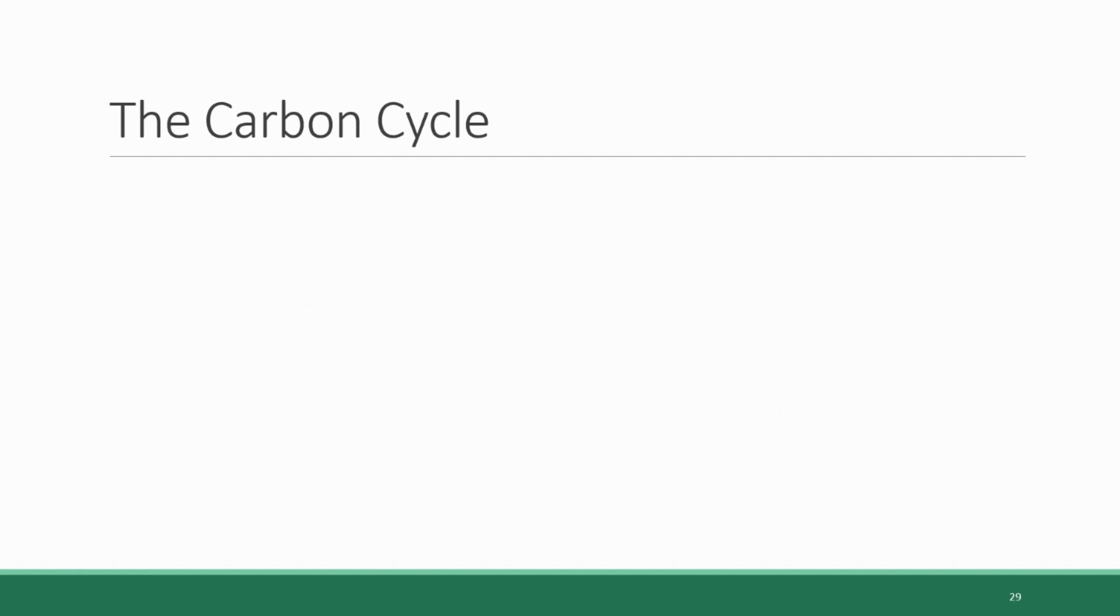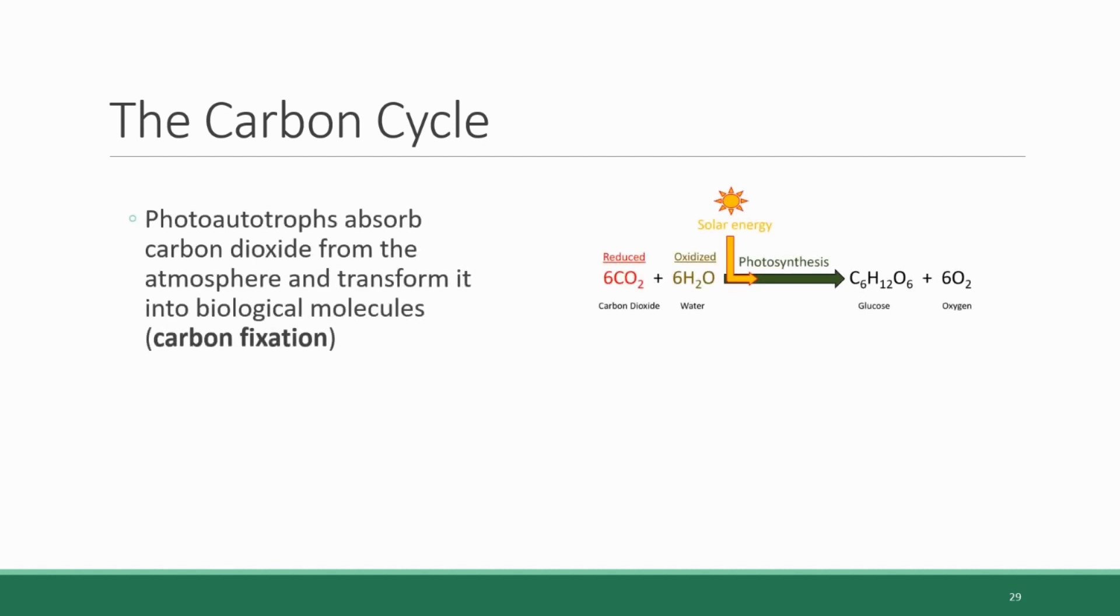And in our discussion of cellular respiration and photosynthesis, we looked at how carbon flows in and out of living things. Carbon is found in the non-living system of the atmosphere in the form of carbon dioxide gas, and photoautotrophs absorb that carbon dioxide and transform it into biological molecules. This is referred to as carbon fixation, capturing the gaseous carbon from the atmosphere and fixing it into other biological molecules.